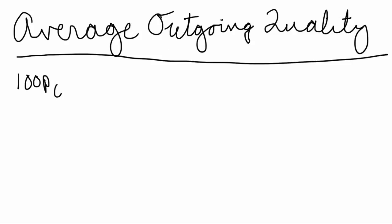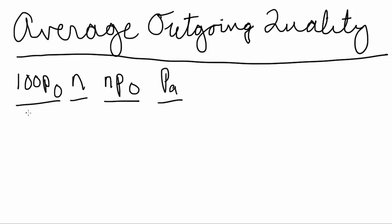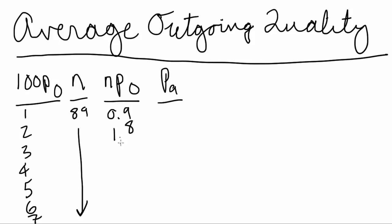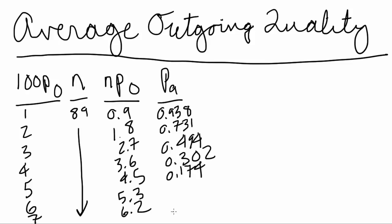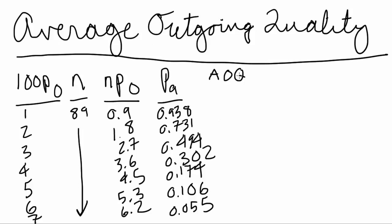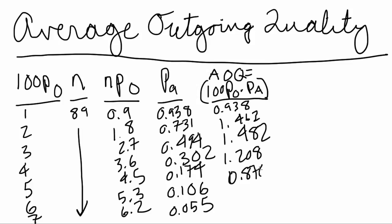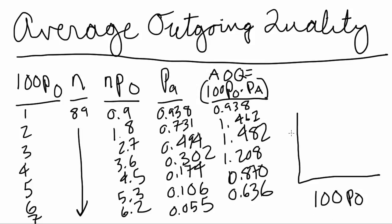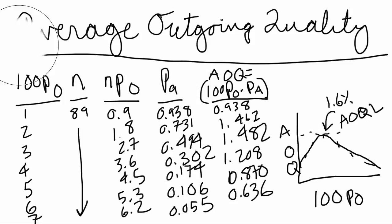The average outgoing quality gives us another way to evaluate sampling plans. In this case we add another column to the table of values used to construct the original OC curve — this is the AOQ column. All we have to do is multiply 100 times the percent non-conforming times the probability of acceptance. We use this column to plot along the y-axis, keeping the same x-axis of percent non-conforming. We'll end up with an inflection point on that curve, which is our average outgoing quality limit. In this case, as the percent non-conforming of the incoming quality changes, the average outgoing quality never exceeds the limit of approximately 1.6% non-conforming.